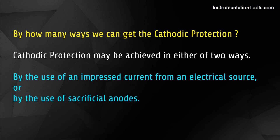By how many ways can we achieve cathodic protection? Cathodic protection may be achieved in either of two ways: by the use of an impressed current from an electrical source, or by the use of sacrificial anodes.